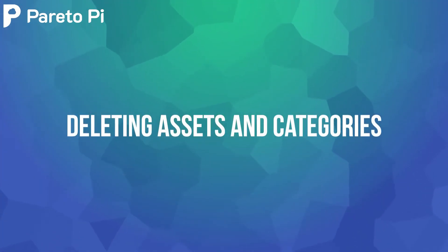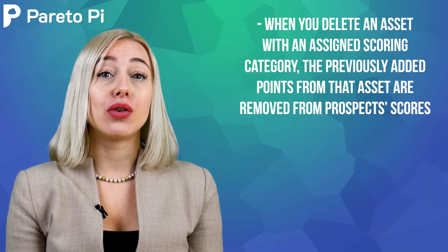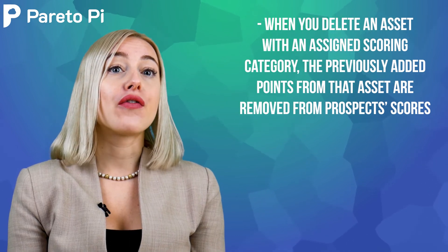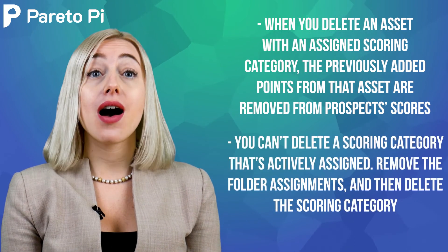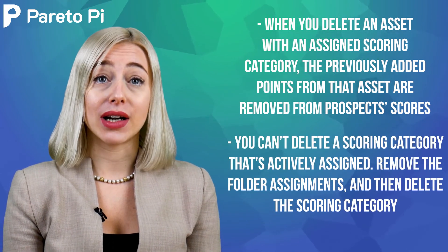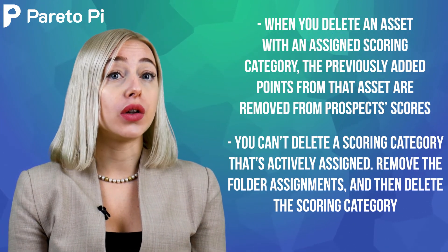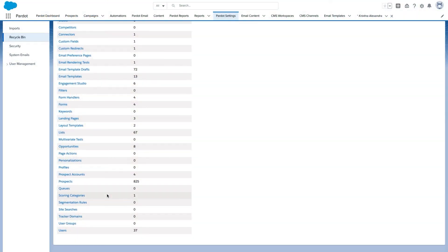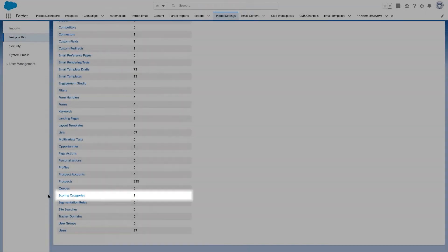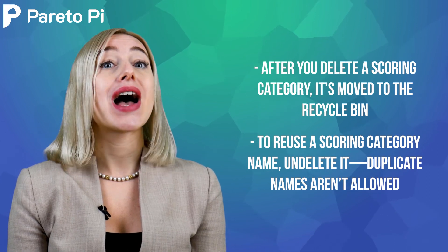Now let's discuss deleting assets and categories. When you delete an asset with an assigned scoring category, the previously added points from the asset are removed from the prospect score. You can't delete a scoring category that is actively assigned — first you will need to remove the folder assignments and then delete the scoring category. After you delete a scoring category, it's moved to the recycle bin. To reuse a scoring category name, you will need to undelete it, as duplicate names are not allowed.